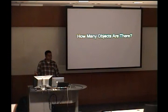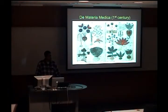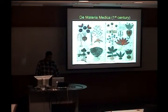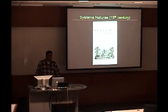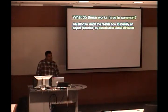Recognizing things is something that people have been doing forever, and even 2,000 years ago people were looking at it in a systematic way. This is a plate from De Materia Medica, a field guide written by Dioscorides in the first century. This book contained illustrations and descriptions of different plant species, with descriptions of how to recognize them and what their medicinal uses were. And more recently, in the 18th century, there was Carl Linnaeus' Systema Naturae, which forms the basis for modern taxonomy. Both works are efforts to teach readers how to identify an object — in this case, plant species — by describable visual attributes.